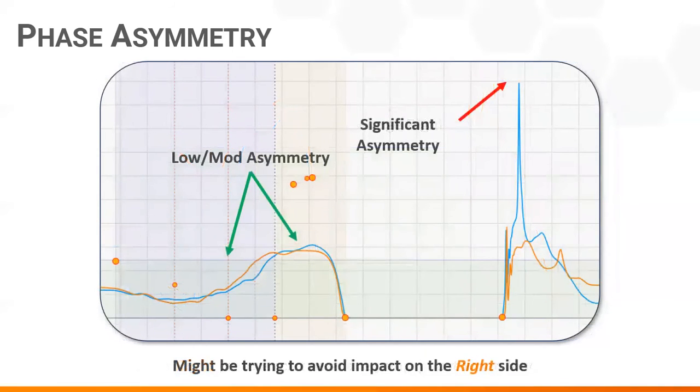Here there's a low to moderate asymmetry during the eccentric and concentric phases. There's not a clear preference left side or right. However, the same cannot be said about the landing phase. So this individual might be trying to avoid impact on the right side.